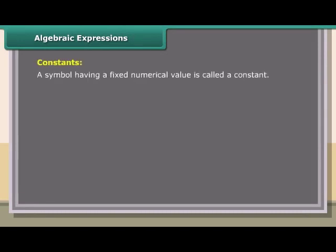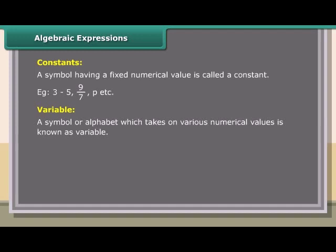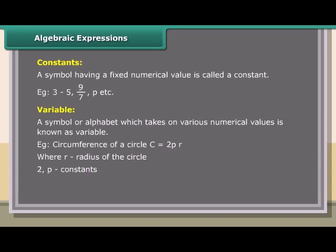Algebraic Expressions: Constants. A symbol having a fixed numerical value is called a constant. Examples: 3, minus 5, 9 upon 7, pi, etc. Variable: a symbol or alphabet which takes on various numerical values is known as a variable. Example: circumference of a circle C equals 2πR, where R is the radius of the circle. Here 2 and π are constants; C and R are variables.